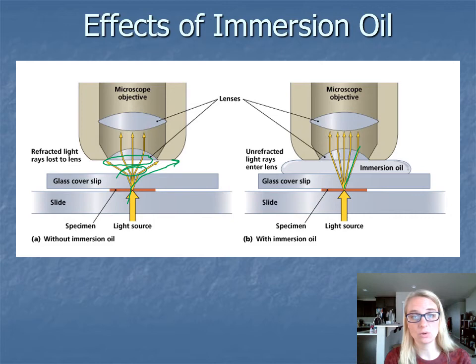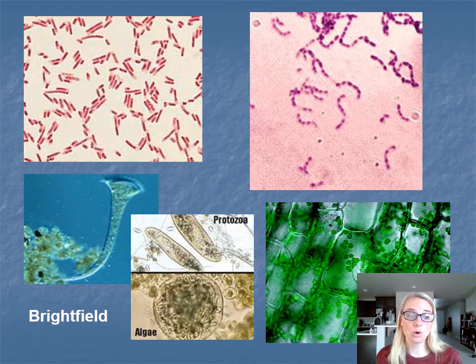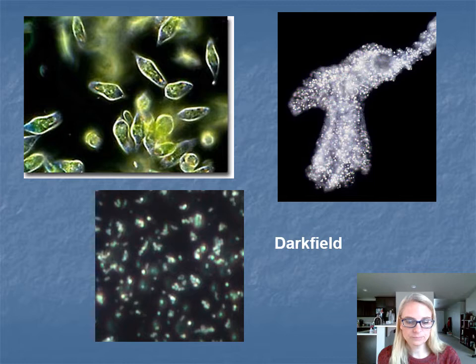You'll be using a compound light microscope with a bright field setting, where the background is typically light in color and the specimen is vibrant — either stained or naturally pigmented. There are also dark field light microscopes where the background is dark and the specimen is illuminated, but we don't have that — it requires a special filter. We'll be using the bright field setting.